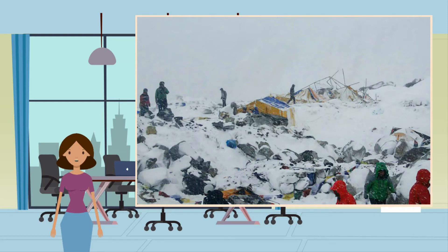The avalanches on Mount Everest killed at least 19 people and avalanches elsewhere left hundreds missing. Landslides blocked rivers — for example, the Kali Gandaki River was blocked and many people had to be evacuated in case of flooding. There was no tsunami as the earthquake started on land.